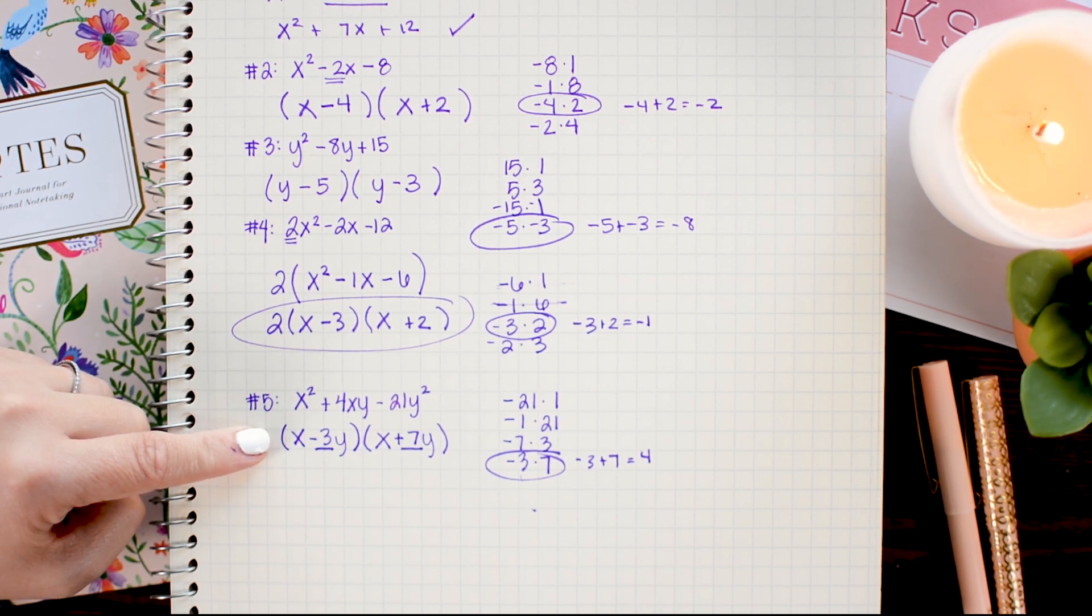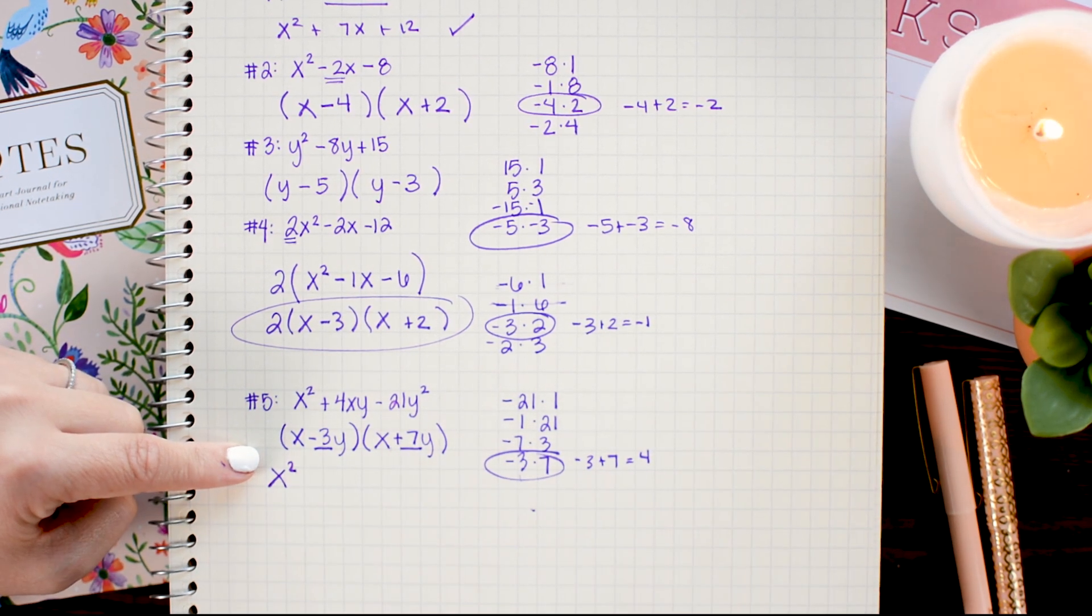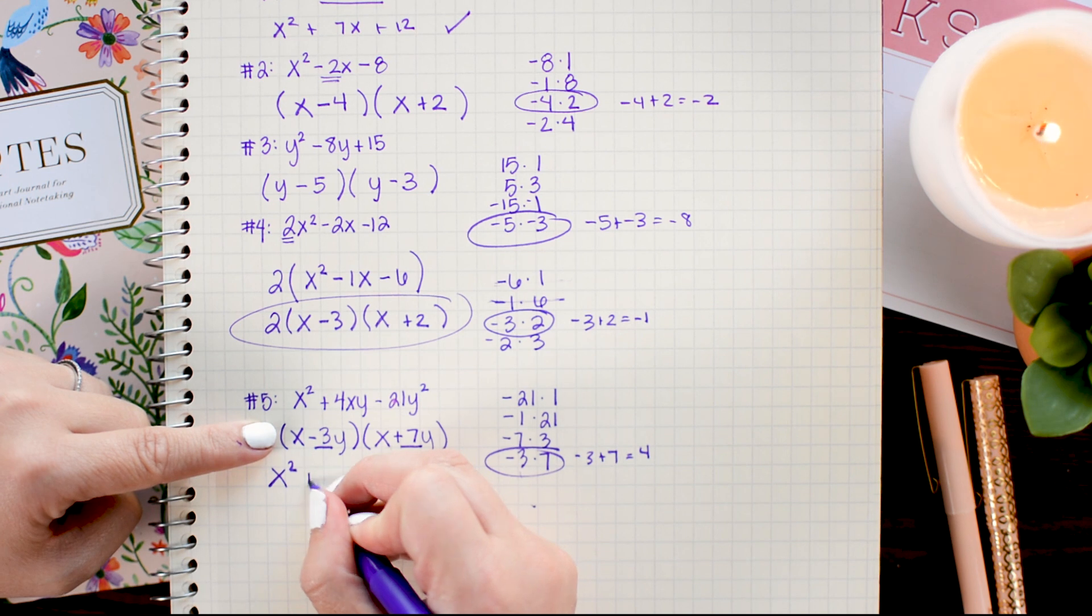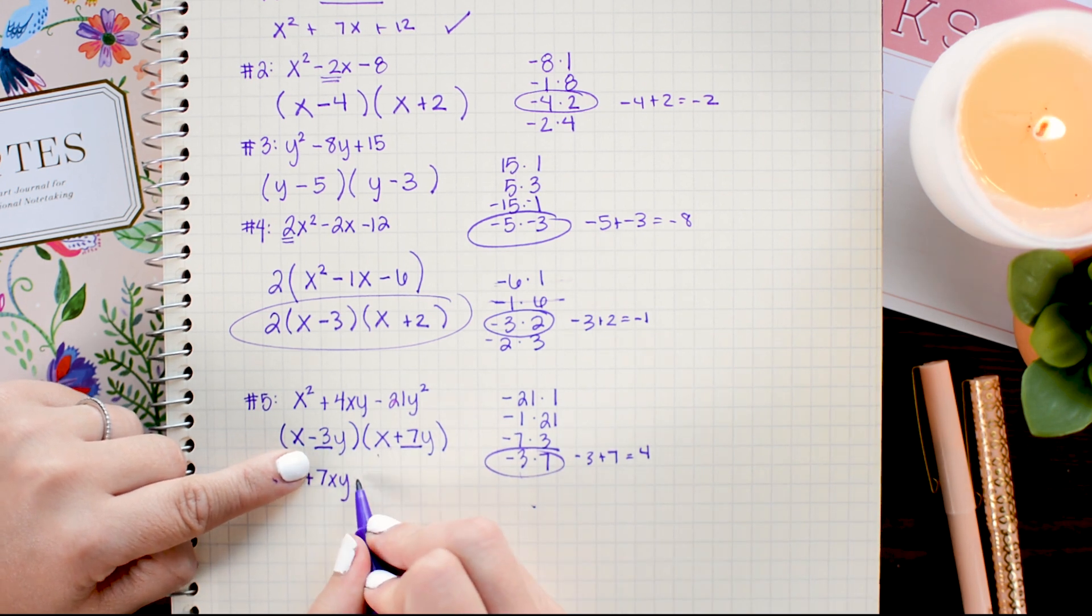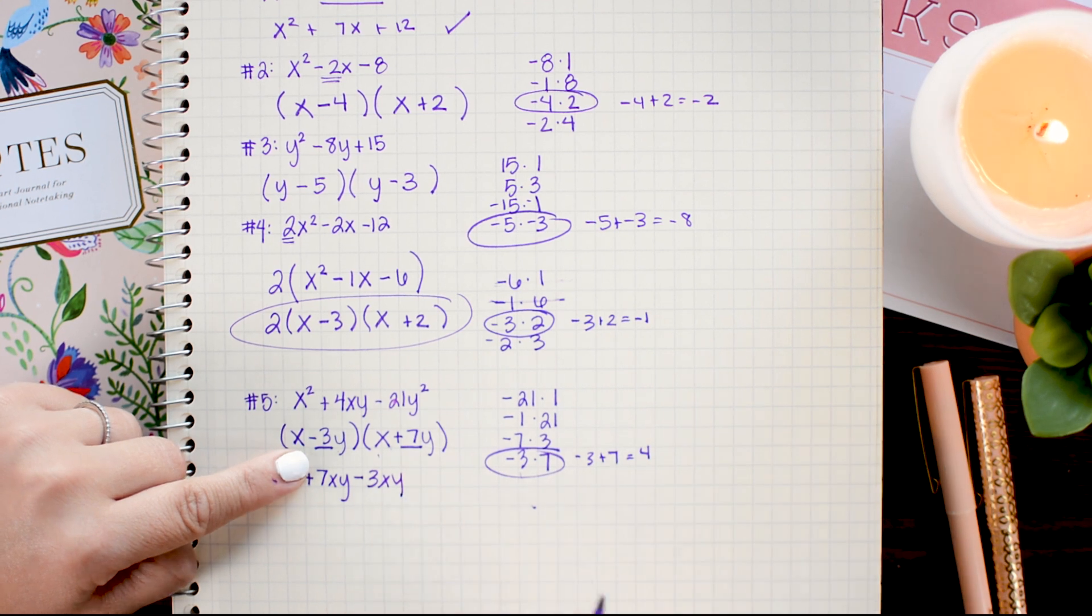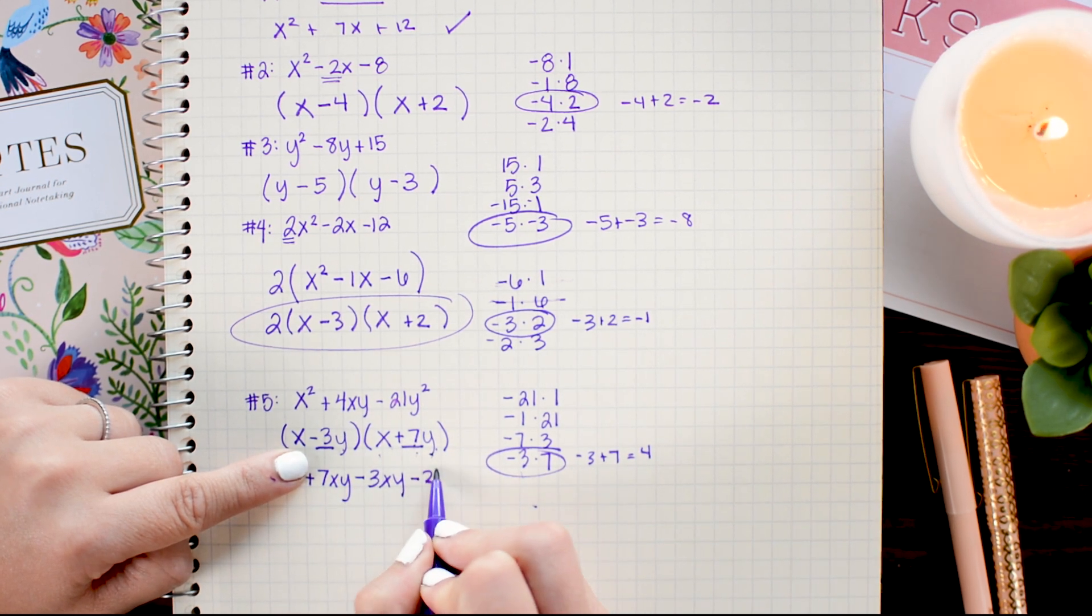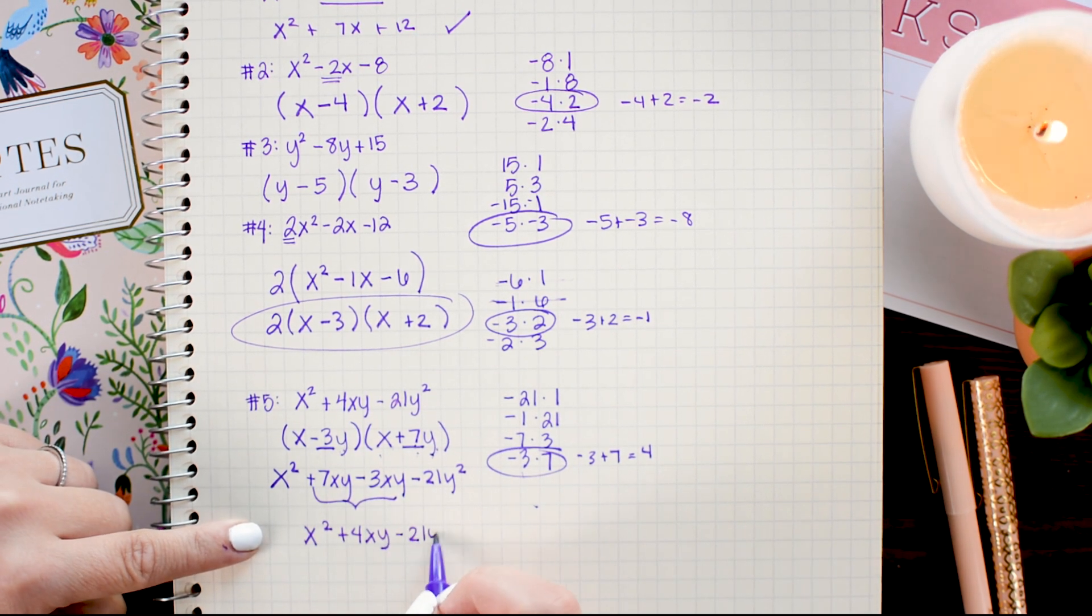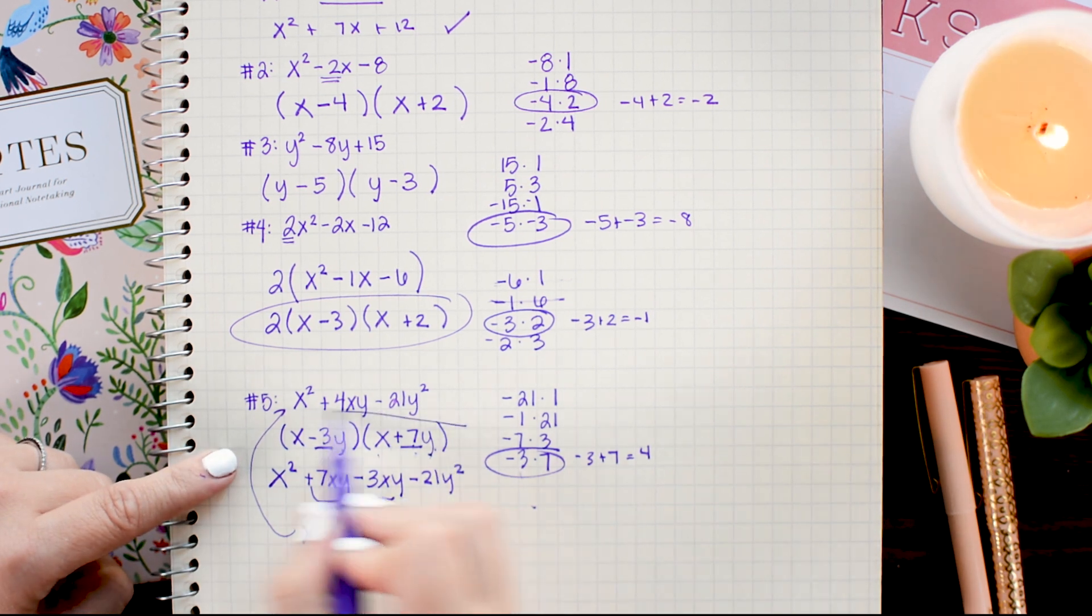For this one, I'm going to go ahead and multiply it back out. So you can see exactly where these x and y's end up in our equation. So for the first term, we have x times x, which gives me x squared. Then I have x times 7y, which is 7xy. Then in the middle, I have negative 3y times x, which gives me minus 3xy. Negative 3y times 7y is negative 21y squared. And you see that that is the exact same as our starting. So this is the correct binomials.